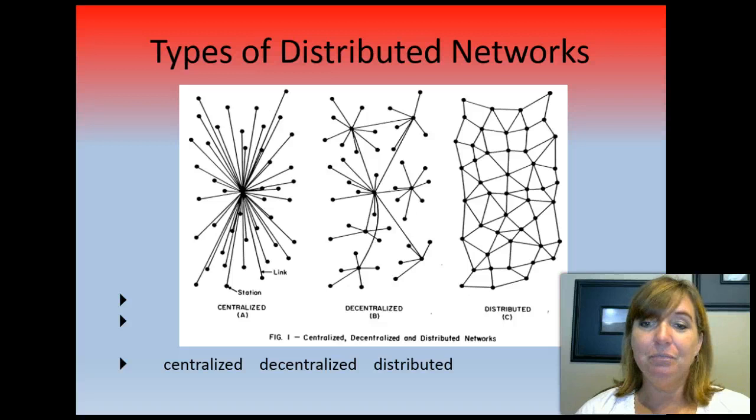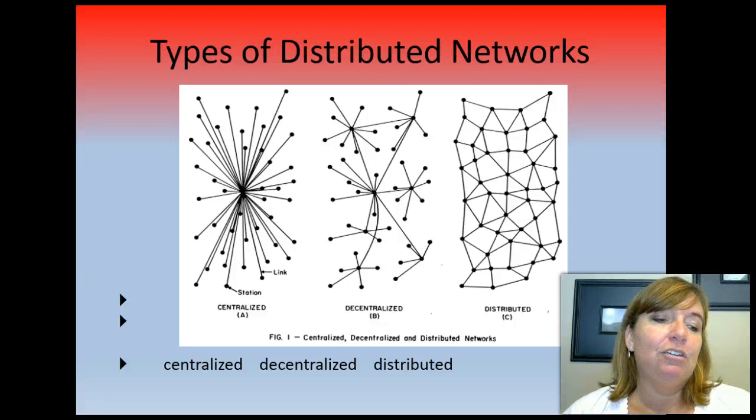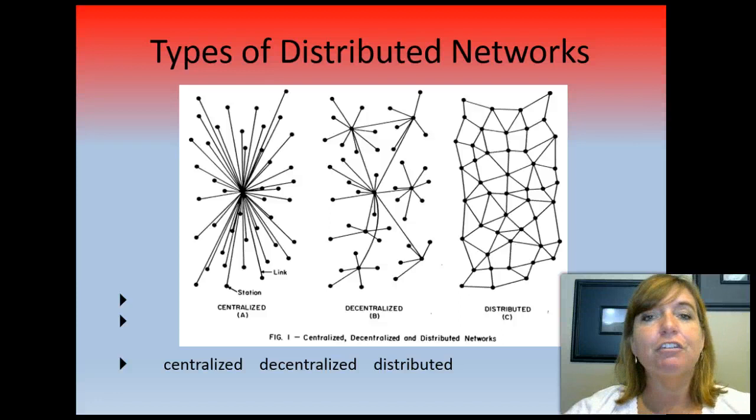It started as a centralized network with the Department of Defense in the center. Then it became a decentralized network where you have the Department of Defense and some research institutions — University of Illinois, Harvard, MIT — having their own networks all connected. But now it's a distributed network, meaning that if Google goes down, the internet still works. If the Department of Defense shuts down, the internet still works.